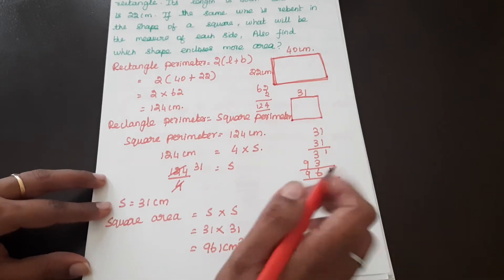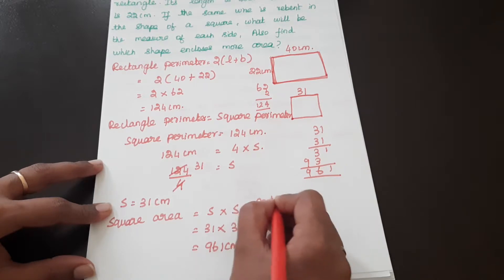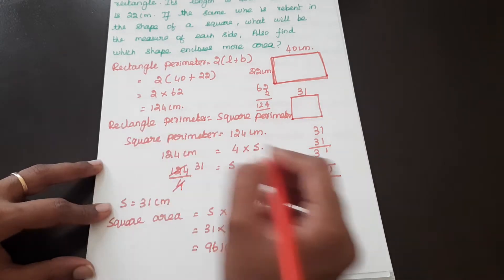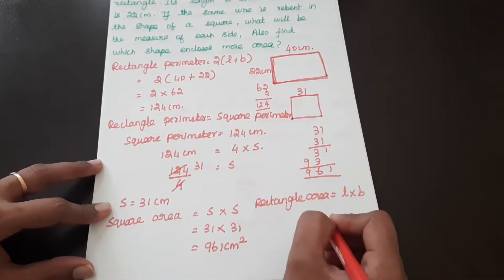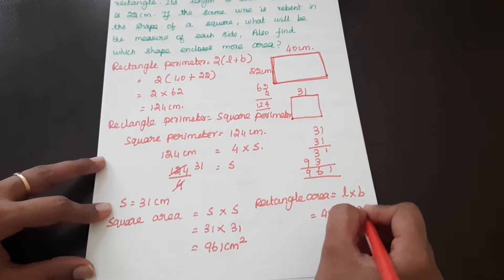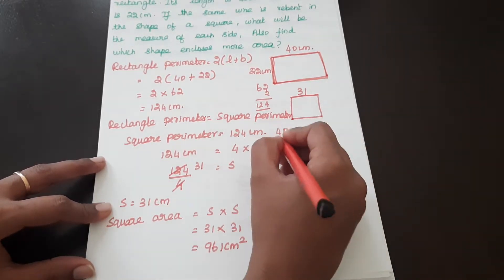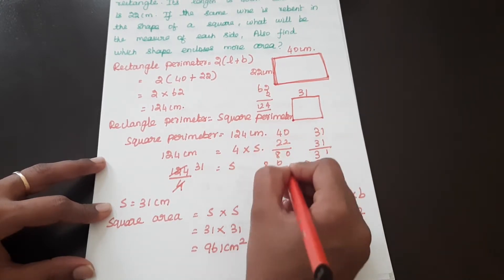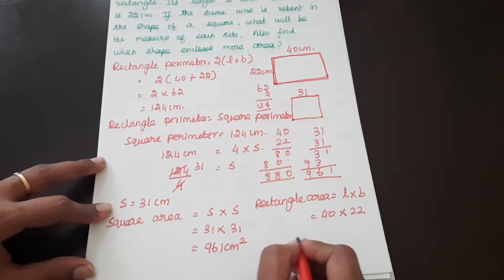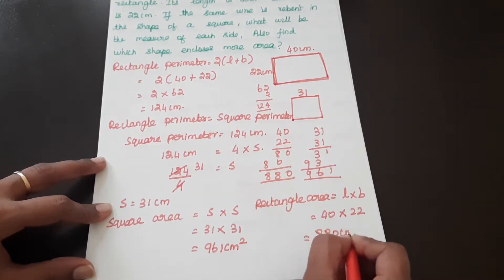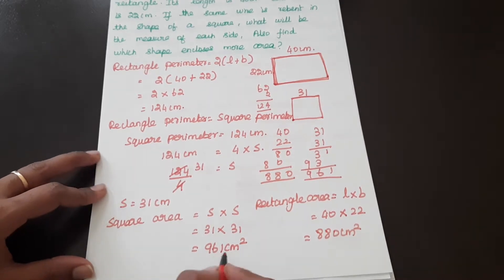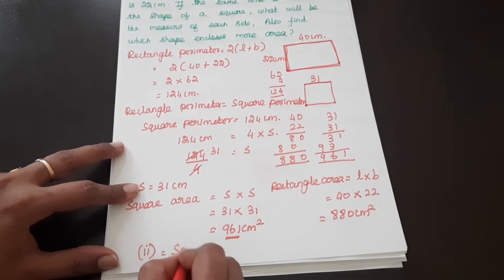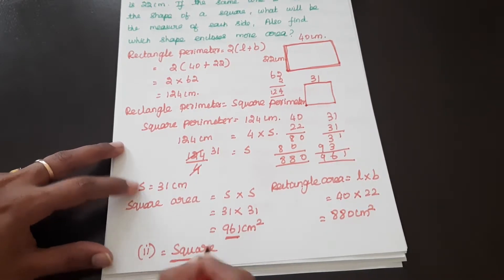Rectangle area equals L into B. L is 40, B is 22. So 40 into 22 equals 880 centimeters squared. Comparing: square area is 961 cm² and rectangle area is 880 cm², so the square encloses more area.